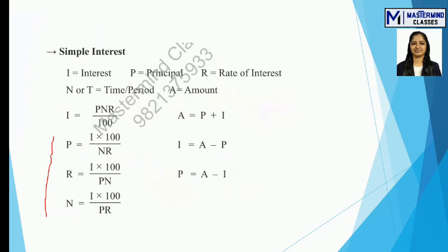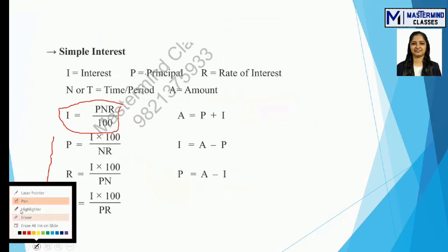The main formula is: SI = PNR / 100, where I is interest (or simple interest), P is principal, R is rate of interest, N (or T) is time period, and A is amount. From this main formula we derive: P = (I × 100) / NR, R = (I × 100) / PN, and N = (I × 100) / PR.